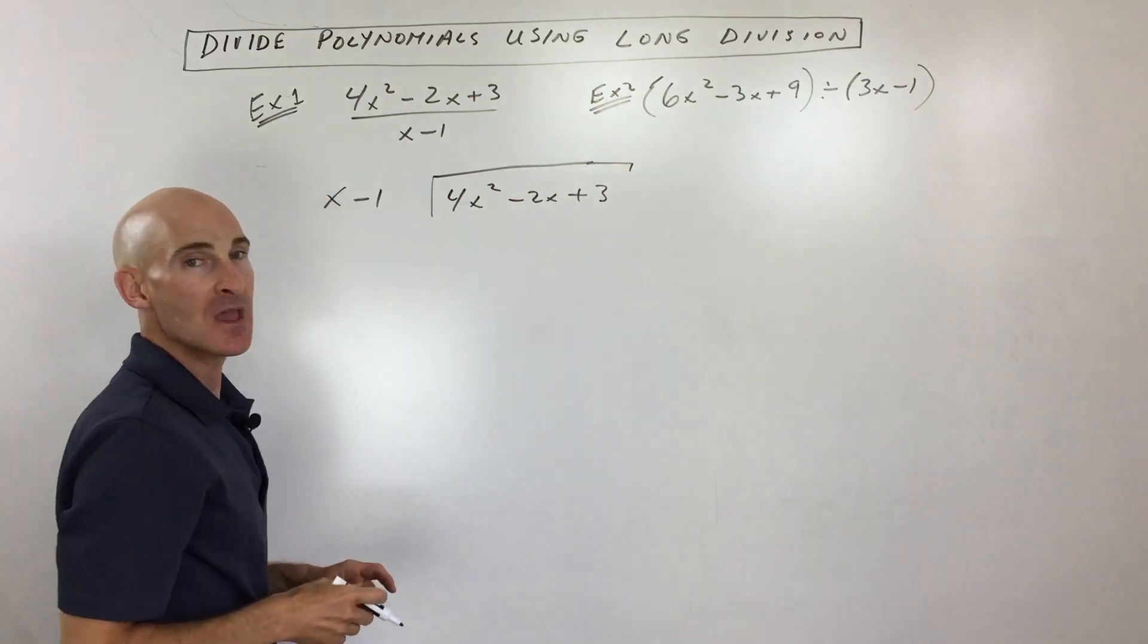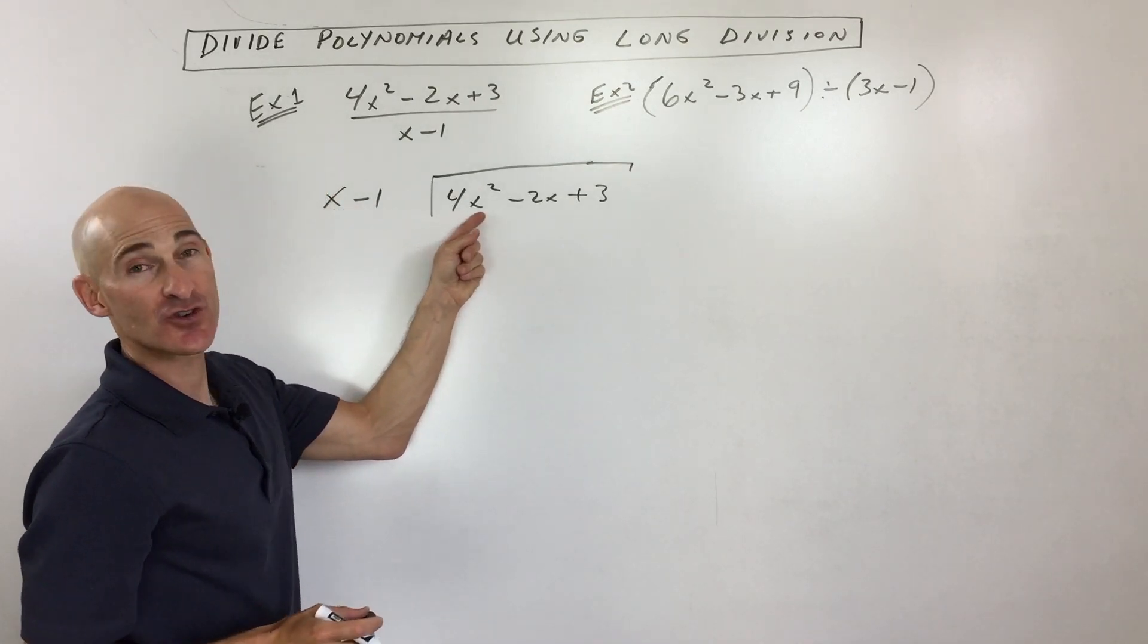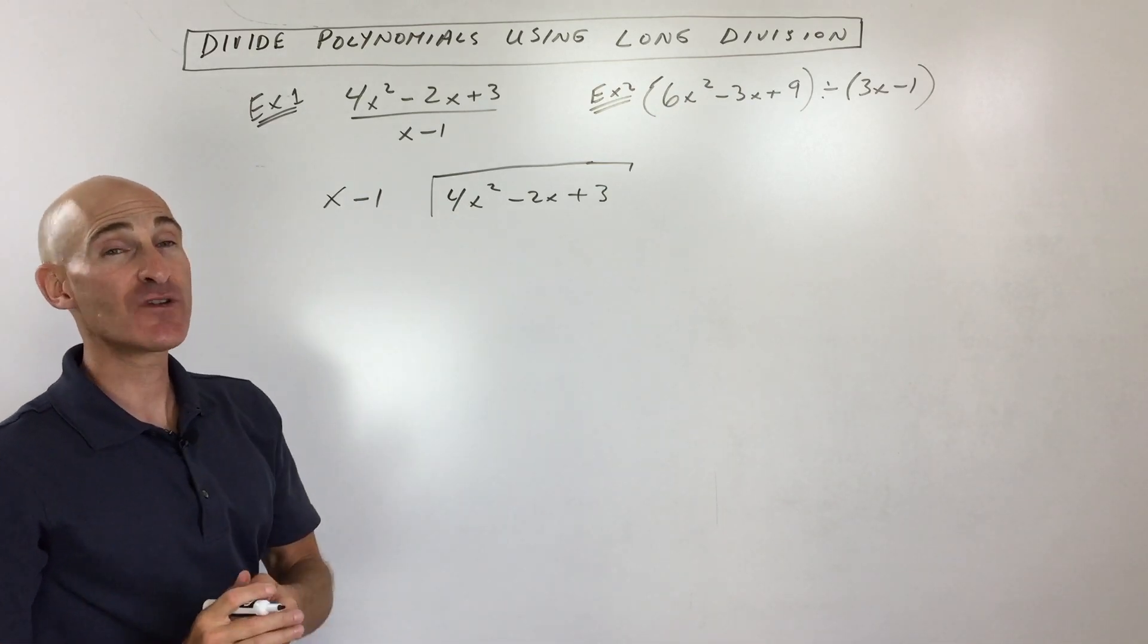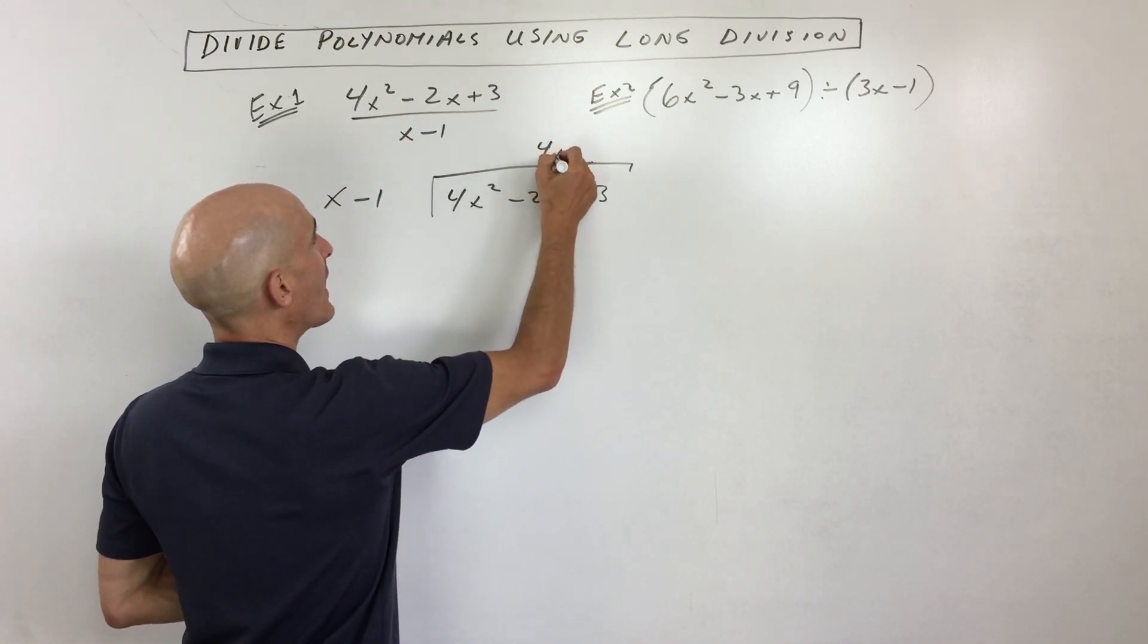Okay, so you're with me so far? So what we do here is we say how many times does x go into this first term 4x squared? And there's a lot of different ways to do this. You can find your favorite way. You could say, well, what's 4x squared divided by x? Well, that's going to be 4x.